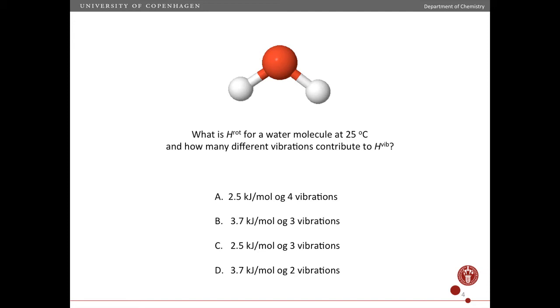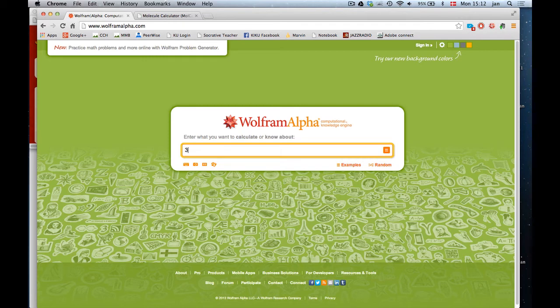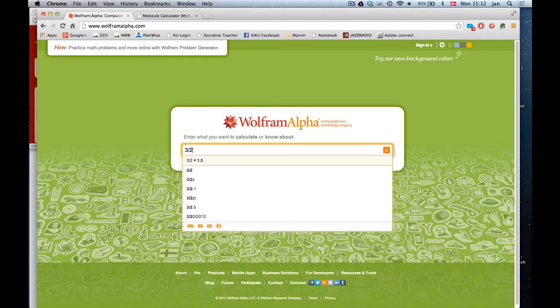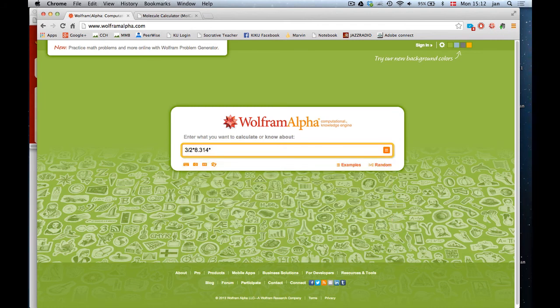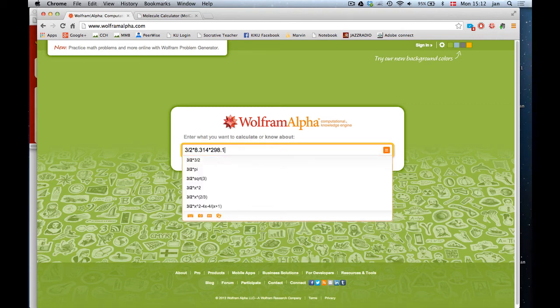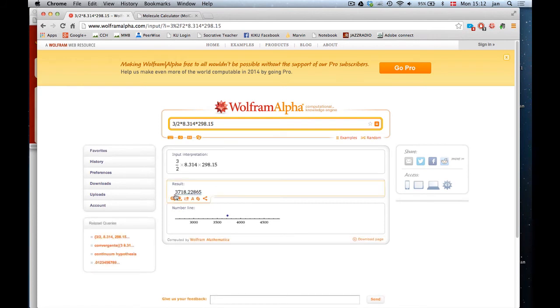The first thing is the rotational enthalpy. That is three halves times r times t. Let's compute that. Three halves times r, which is 8.314, times t. Of course, here you have to always use Kelvin. So, 25 degrees Celsius is 298 degrees Kelvin. And you can see the answer is 3.7 kilojoules per mole. This number here is in joules because that is the unit of the gas constant here.